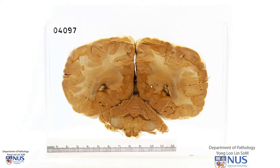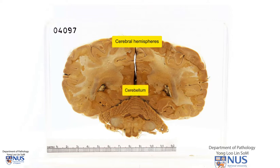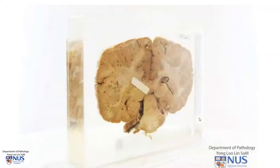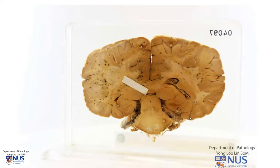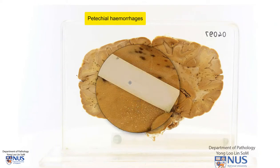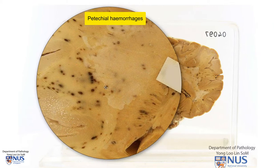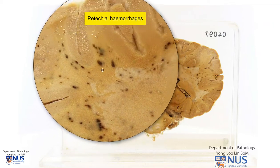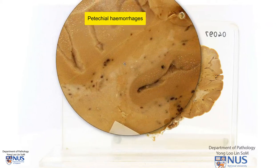This is a coronal section of the brain, and we're looking at the cerebral hemispheres. We have the gray matter, the white matter, and actually this is the cerebellum. Let me turn this around, and we can see the pathology more clearly on this surface. What we're looking at is the presence of multiple blackish petechial hemorrhages, and these are dotted mainly throughout the white matter, as you can see.